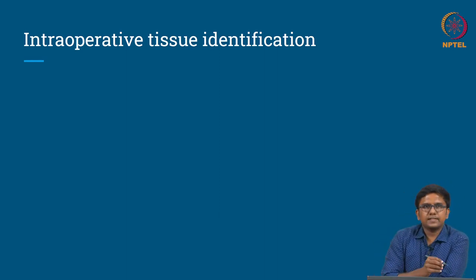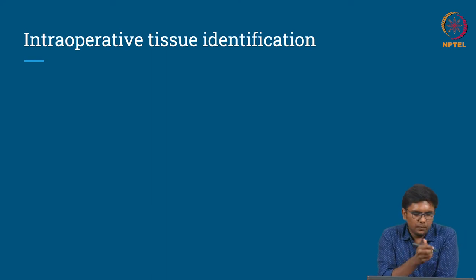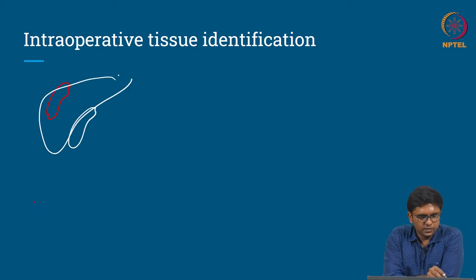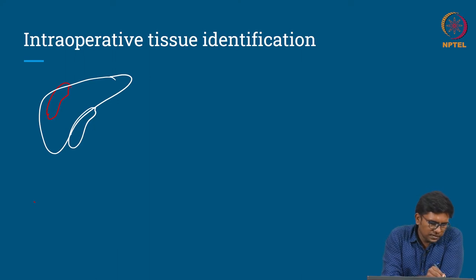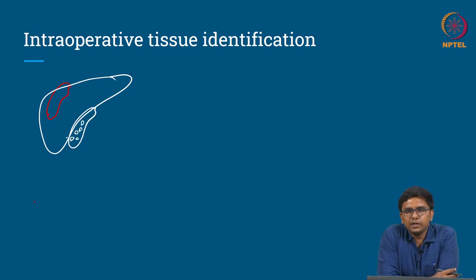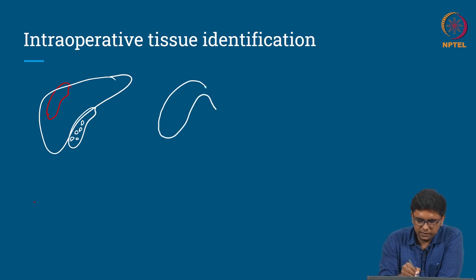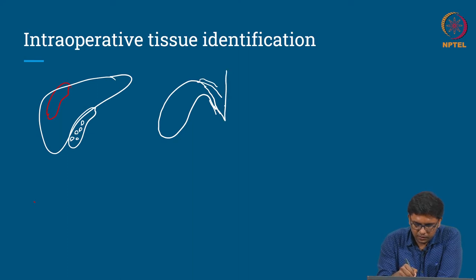Let us take the example of a gallbladder surgery. We know the gallbladder is a pear-shaped organ present on the under surface of the liver. People tend to form stones inside the gallbladder and the only procedure available for treatment is removal of the gallbladder, which is called cholecystectomy. This gallbladder has two connections: one is the cystic duct and another is the cystic artery, and there is a vital structure called the bile duct running alongside.